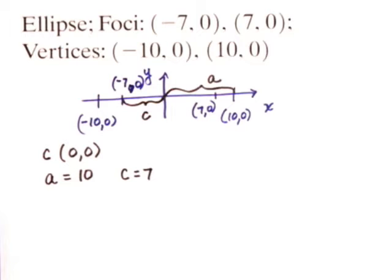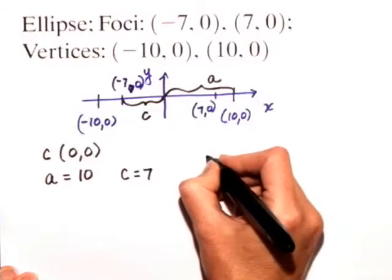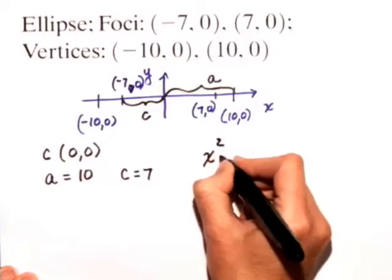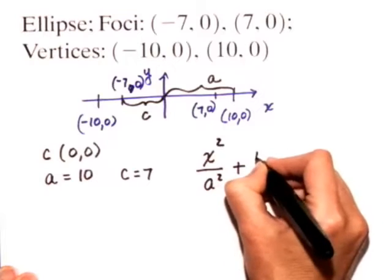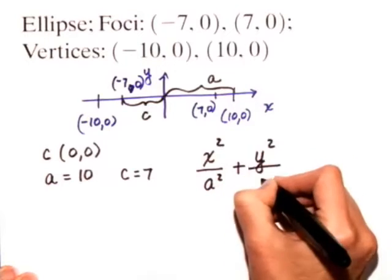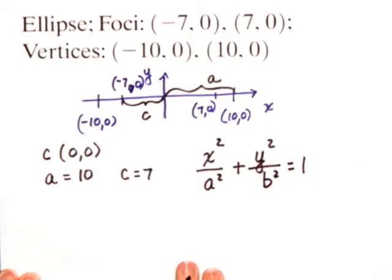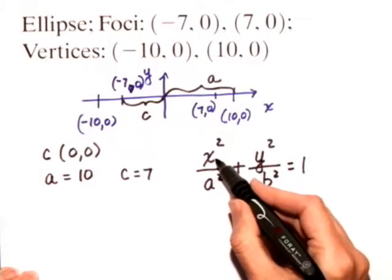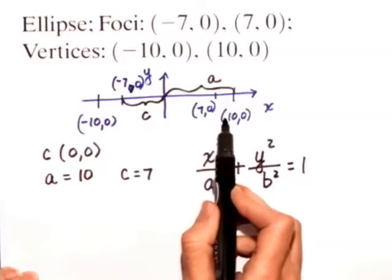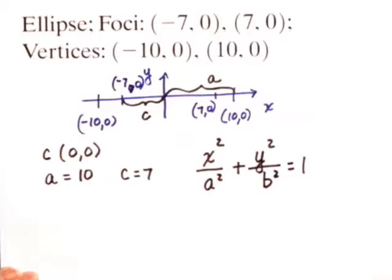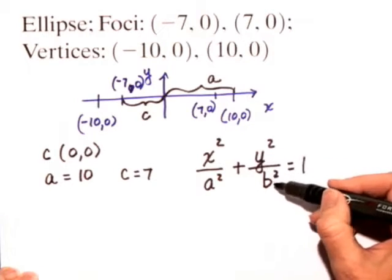Now we're ready to start writing the standard form for this equation. We're going to have x² over a² plus y² over b² equals 1. I know that a² goes under x² because the x-axis contains the vertices. If the y-axis contained the vertices, I would put y² over a².